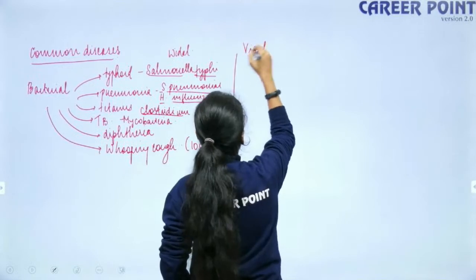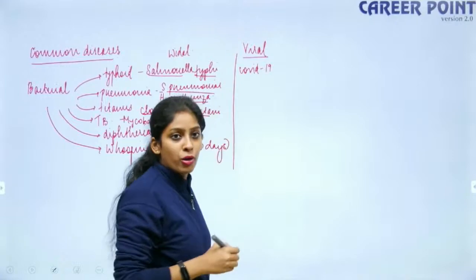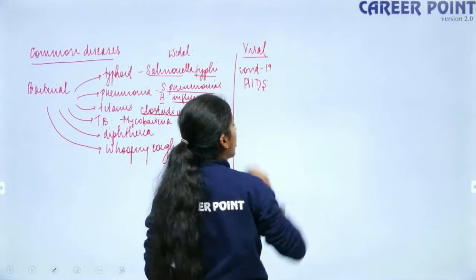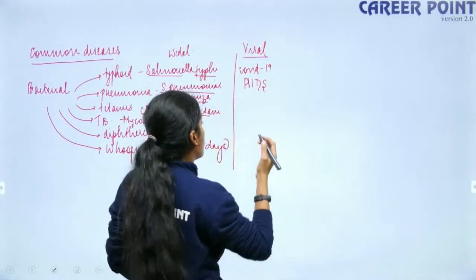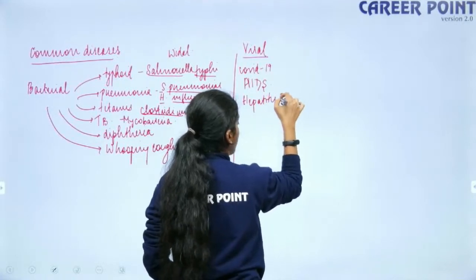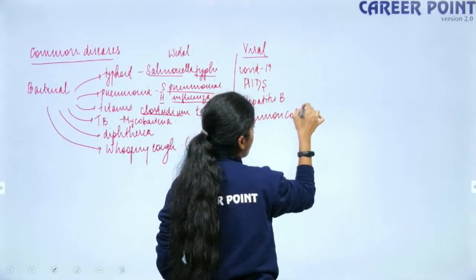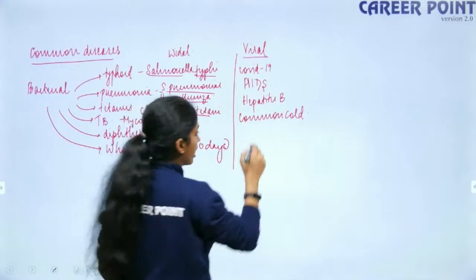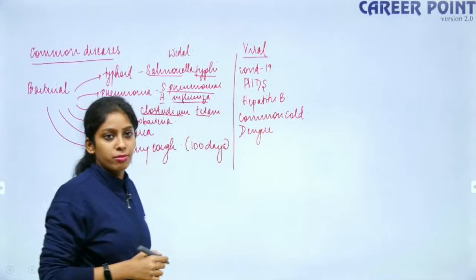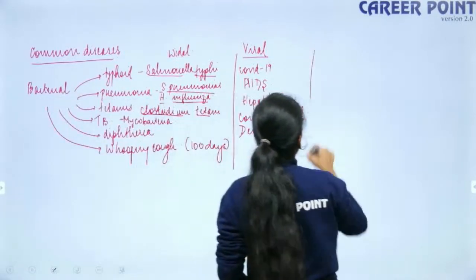Viral diseases: COVID-19 is caused by coronavirus. AIDS is caused by HIV. Hepatitis B is caused by herpes simplex virus. The common cold is caused by rhinovirus. Dengue is also a viral infection caused by arbovirus, with the mosquito as its carrier.